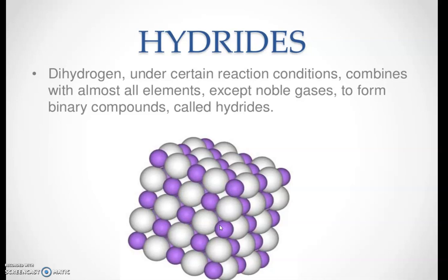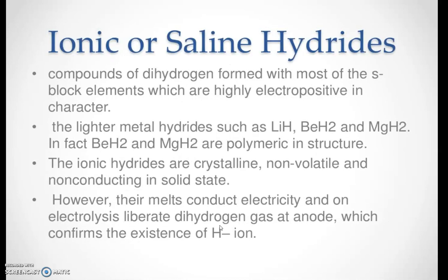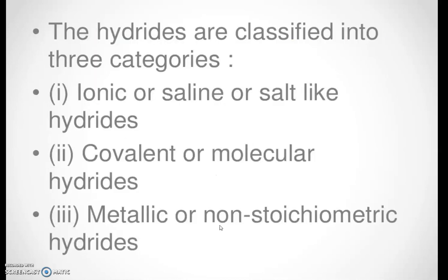Hydrides are substances formed when dihydrogen, under certain reaction conditions, combines with almost all elements except noble gases. These binary compounds are known as hydrides. They are further classified into ionic or saline hydrides, covalent or molecular hydrides, and metallic or non-stoichiometric hydrides. We will study the properties and preparation of hydrides in the next class.